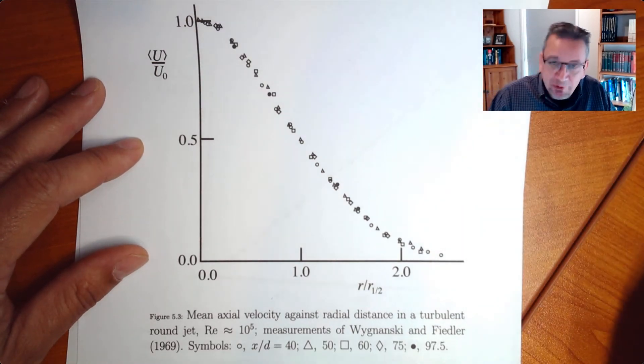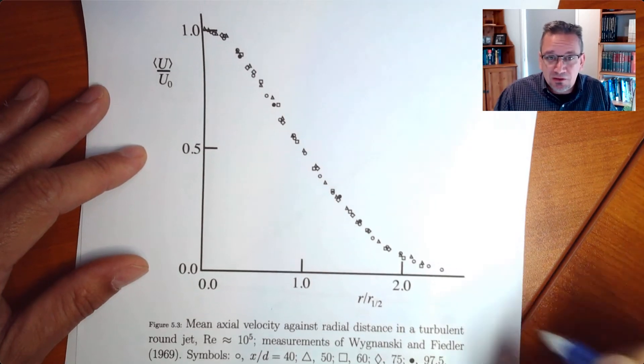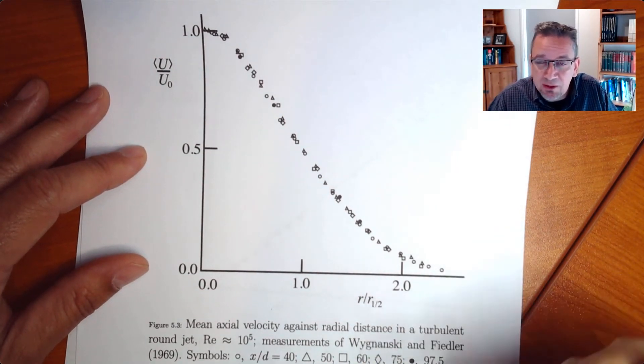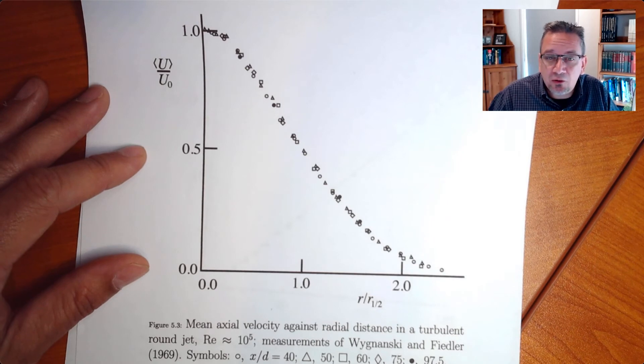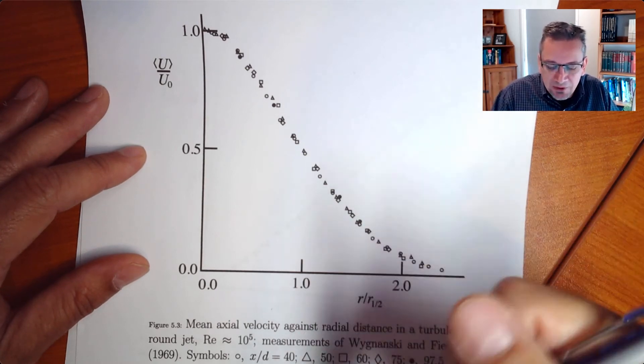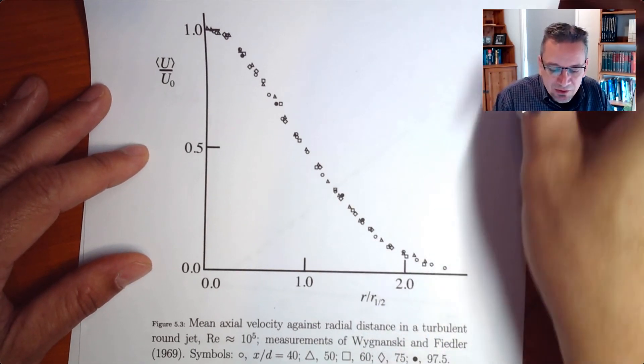So we need, that is now for the velocity profile, so then you can see that all of these are actually self-similar, they're all falling onto the same graph. That means the jet flow is self-similar.